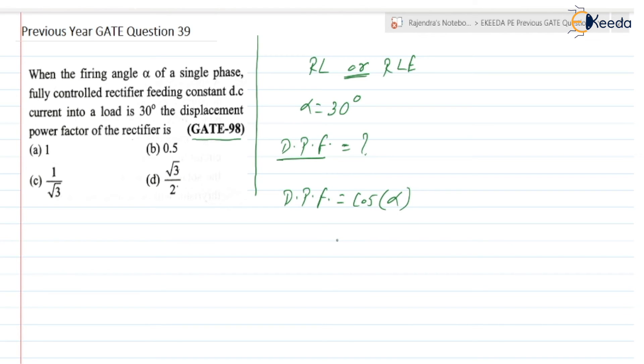It is equal to cos alpha, which is equal to cos of 30 degrees, which is equal to 0.866. That is nothing but root 3 by 2, equal to root 3 by 2.